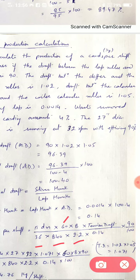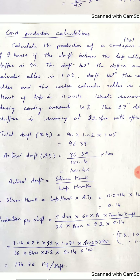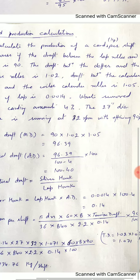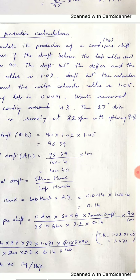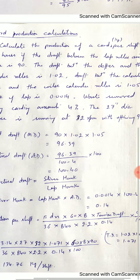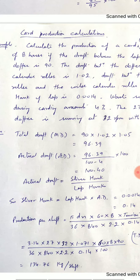And 90 is the given efficiency, 90 percent. So when we put values here, the tension draft will be 1.02 multiplied by 1.05. Two zones are given here between doffer and table calendar role, and table calendar role to coiler calendar role. So total tension draft will be 1.071. So by putting values we get production in kilogram per shift of 8 hours: 134.76.